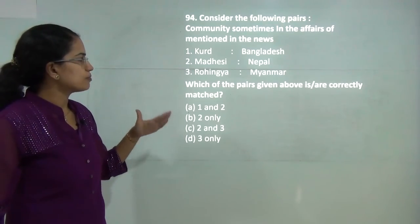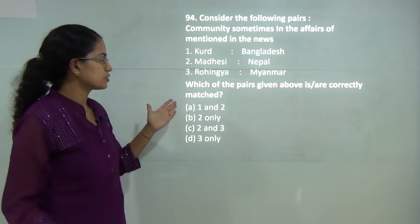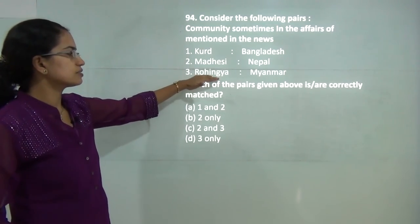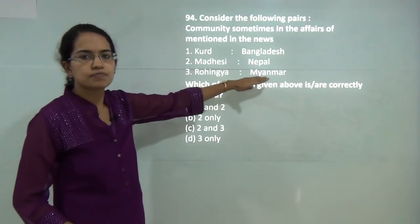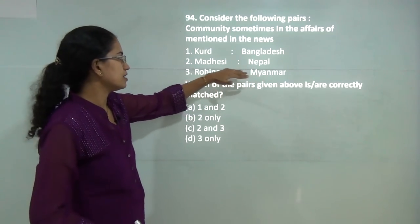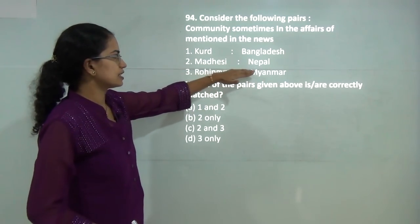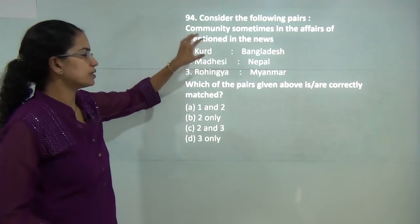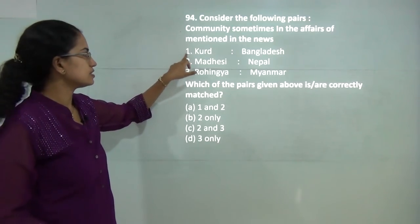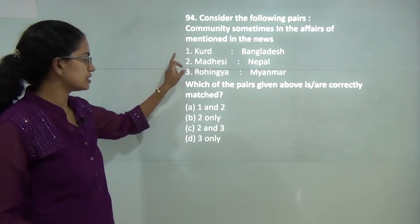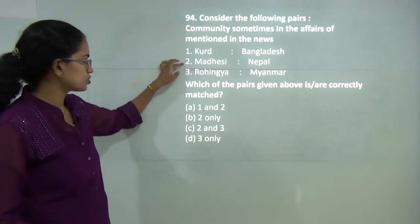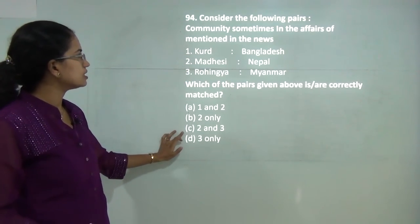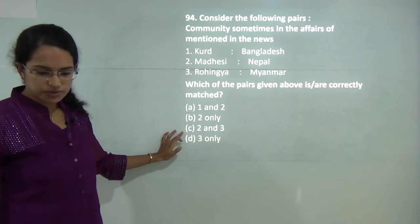The next question requires matching groups correctly. Rohingyas are found in Myanmar, Madhesis are in Nepal, however Kurds belong to the Middle East. So match 1 is incorrect, and 2 and 3 are the correct options here.